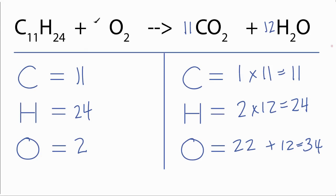If I put a 17 in front of the oxygen, 17 times 2, that gives me 34. And now this combustion reaction is balanced. This is Dr. B, and thanks for watching.